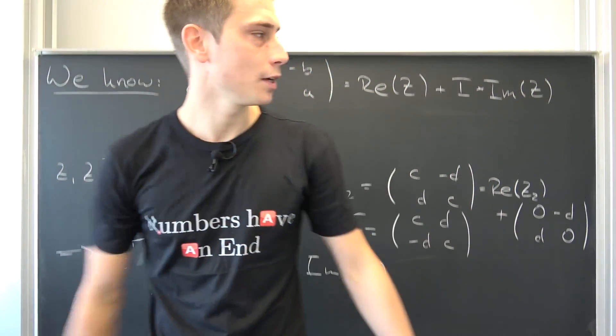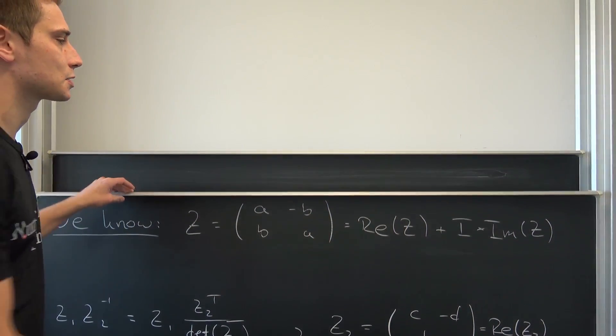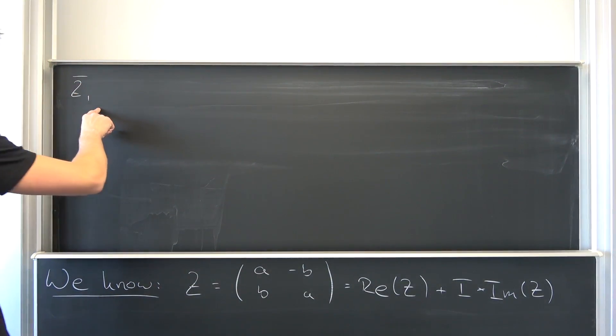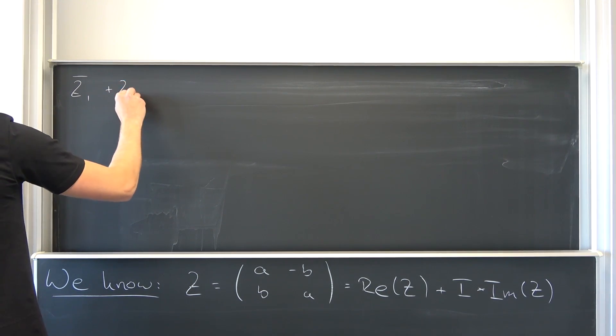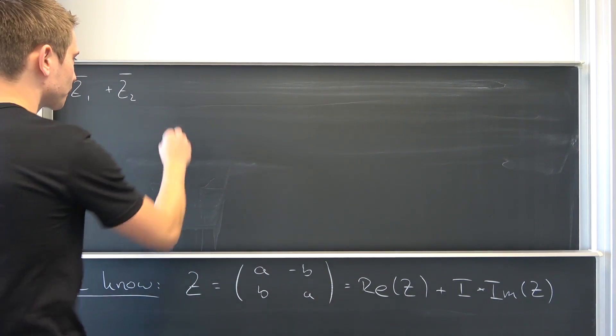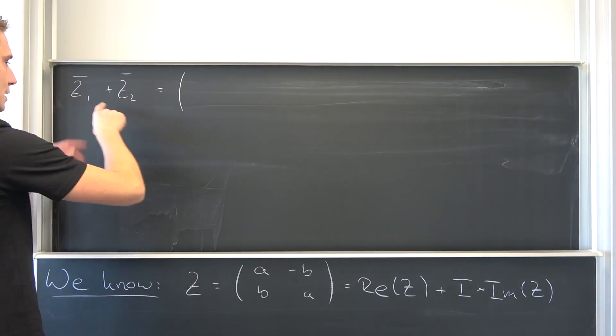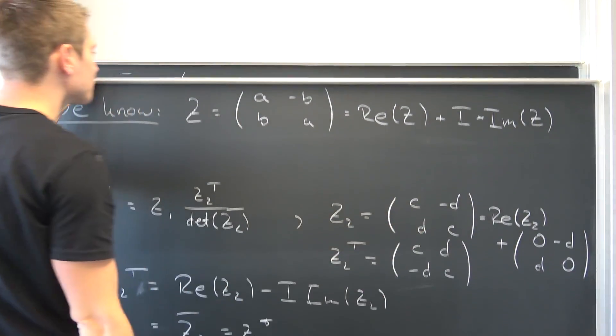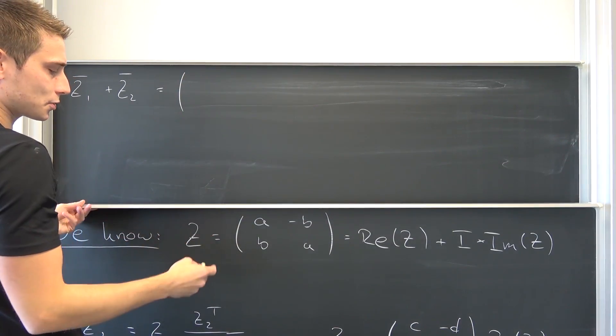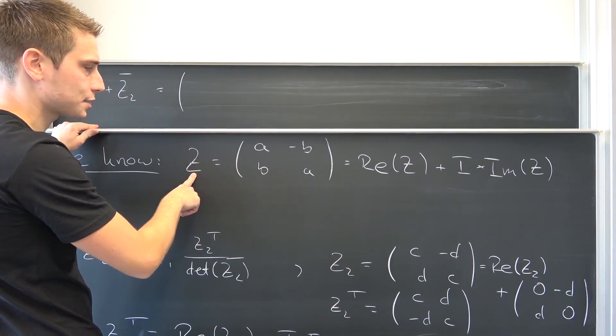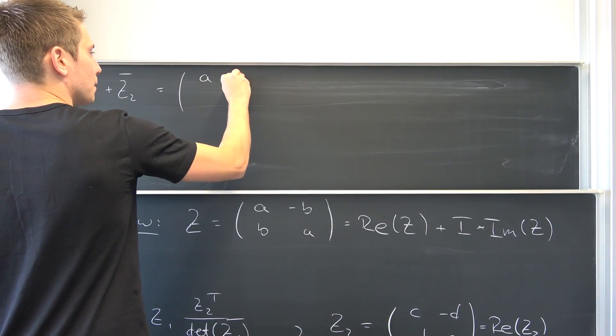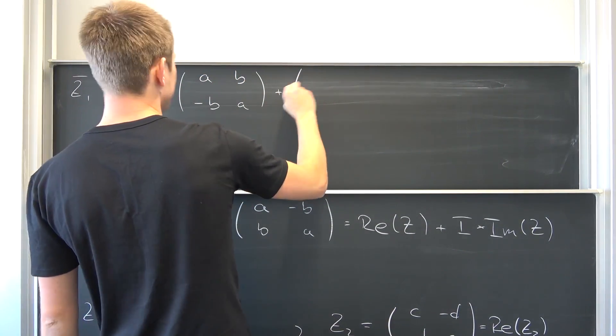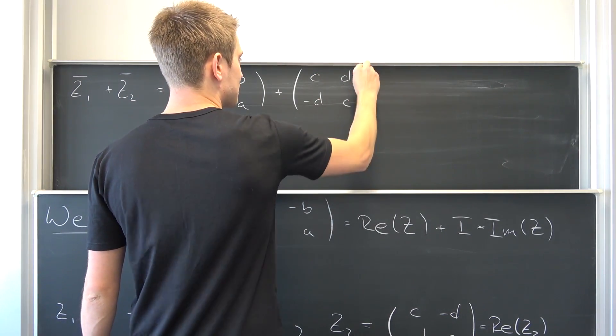Now we are going to find out a few things about the complex conjugate. For example, what happens if we add the complex conjugate of z1 together with the complex conjugate of z2? Now this is going to be z1 is this thing right here and z2 is going to be this yet again. We are going to end up with, the complex conjugate is just a transpose of z1 meaning it's a b, negative b and a, plus c d, negative d and c.